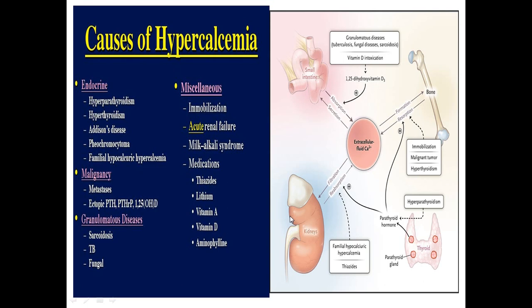The endocrine causes of hypercalcemia include hyperparathyroidism, Addison's disease, pheochromocytoma, familial hypocalciuric hypercalcemia, and hypercalcemia itself. Granulomatous causes include tuberculosis, lung disease, and sarcoidosis. These stimulate vitamin D activity and cause calcium dysregulation.